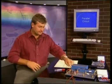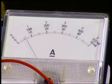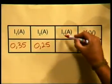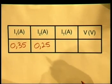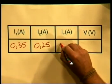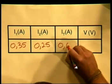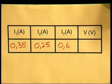Now for our third current reading, which will measure the total current in the circuit. Notice that the reading is now 0.6 amperes. Let's take that reading and put it onto our table. IT stands for the total current in the circuit, which was measured as 0.6 amperes.